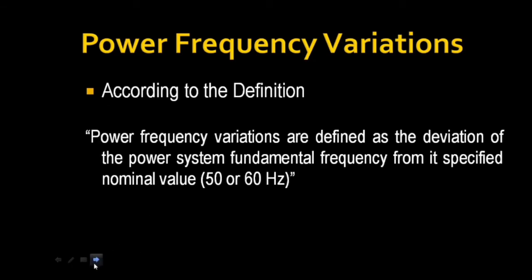Any deviation from these standard frequencies is called power frequency variations, which disturbs the electric power quality. According to the definition, power frequency variations are defined as the deviation of the power system fundamental frequency from its specified nominal value — 50 or 60 Hz.